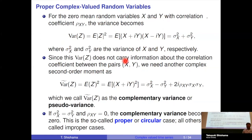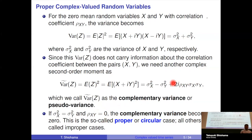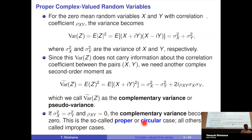A simple assumption is that x and y have identical distributions and are independent random variables. In this case, the variance of x and y are equal, and the correlation coefficient between x and y becomes zero, so the complementary variance becomes zero and holds no additional information. When x and y are i.i.d., the time series of complex variable z is called proper or circular. All other cases are called improper.